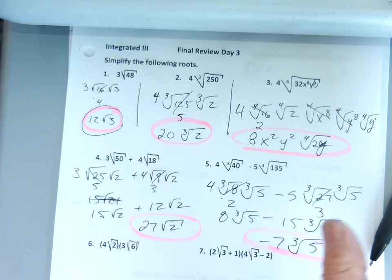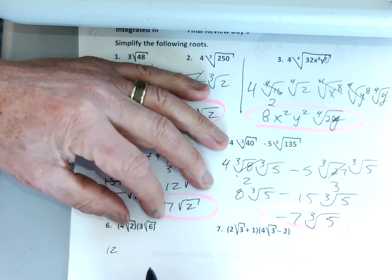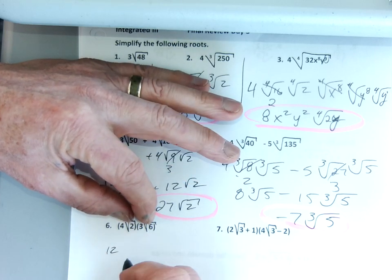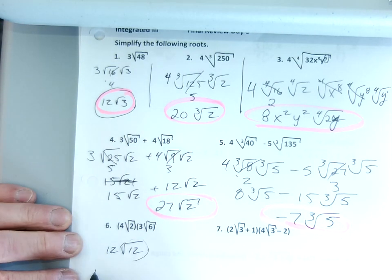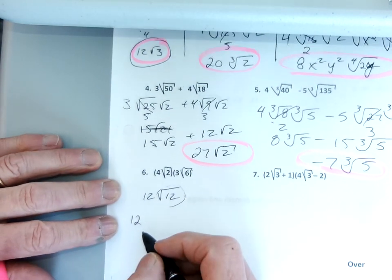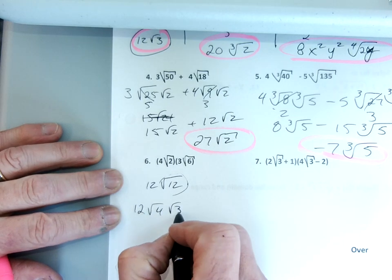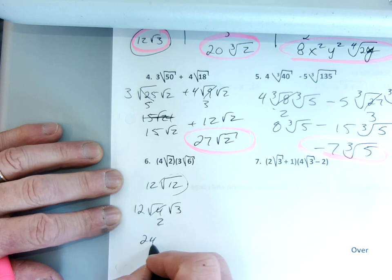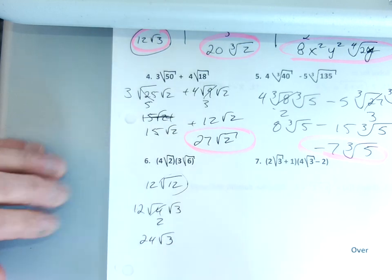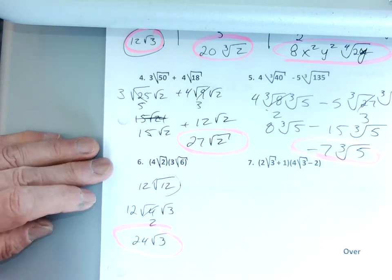Number six: I'm just going to multiply. 4 times 3 is 12. Square root of 2 times square root of 6 is square root of 12. There's more I can do — I can break up this square root of 12. I'll leave the whole number 12 out in front. Square root of 12 is square root of 4 times square root of 3. Square root of 4 is 2, so 2 times 12 is 24 times the square root of 3. You guys should be good at this — we've done this a bunch of times.